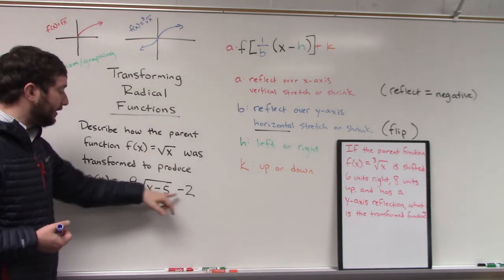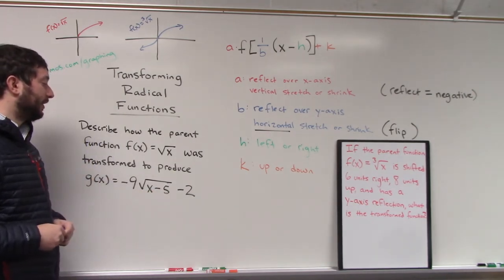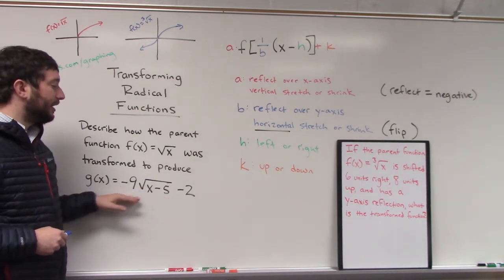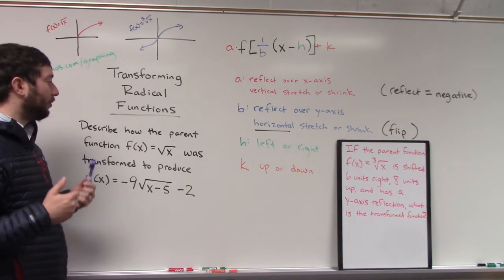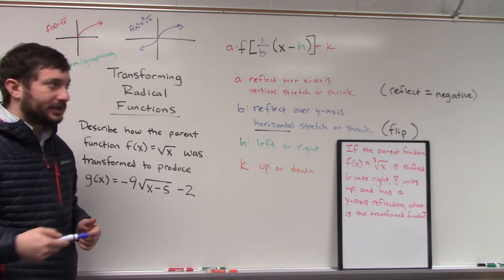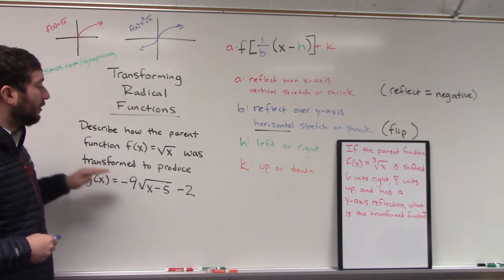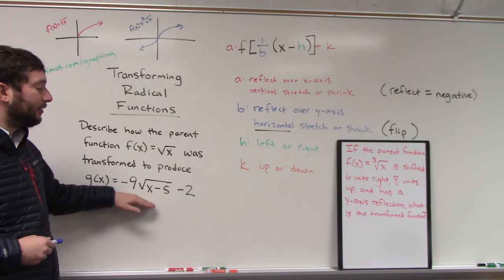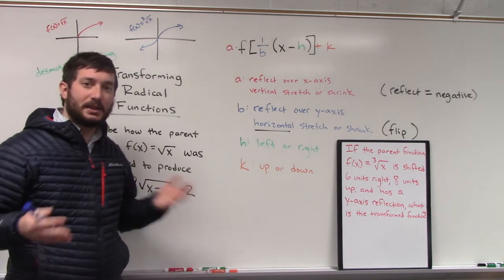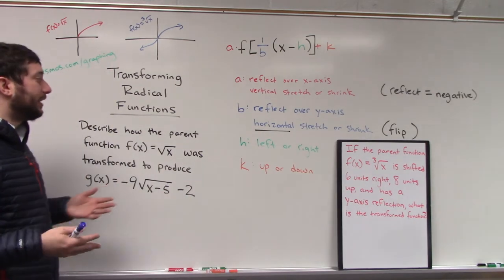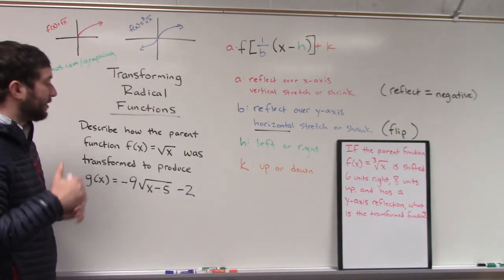For example, down here, g of x is an example of a transformed square root function because we have a lot of other things going on. We've changed a, b, h, or k around the square root or inside of it, and we want to describe how this original parent was transformed to produce this child or transformed function. So, did a change, did b change, did h, did k change? Let's ask these questions and see what the result is.